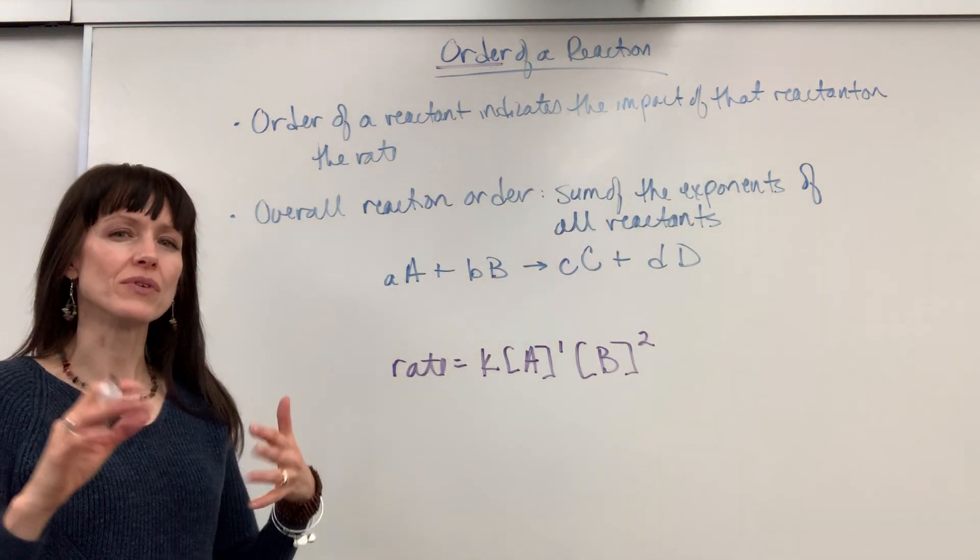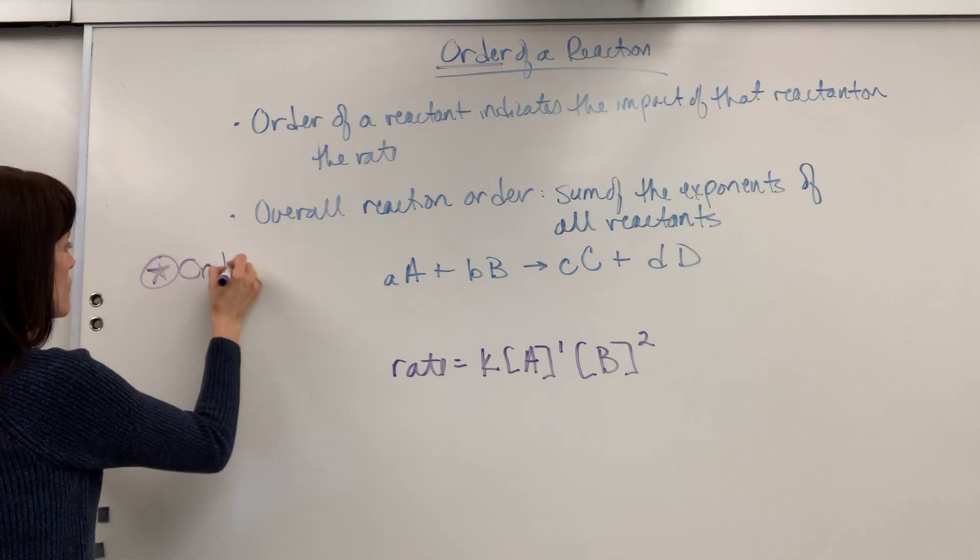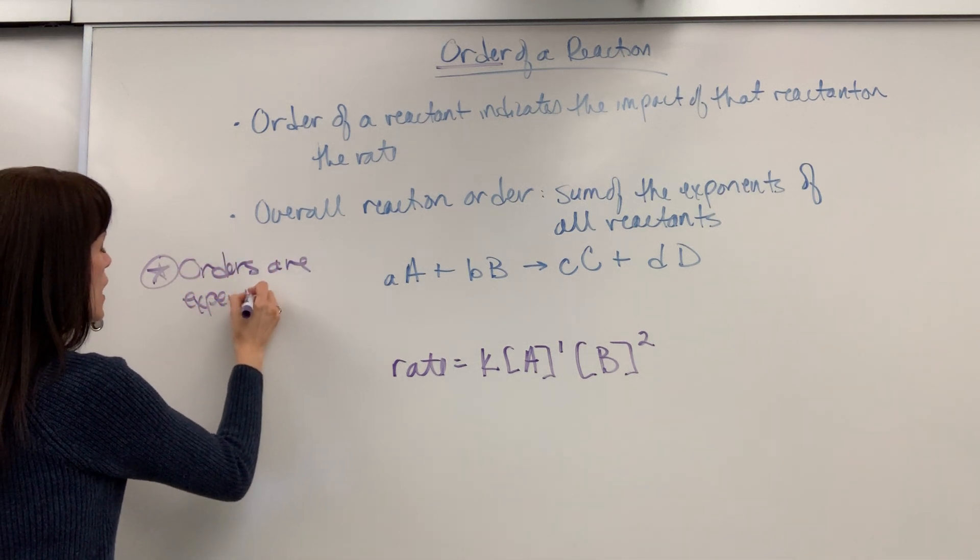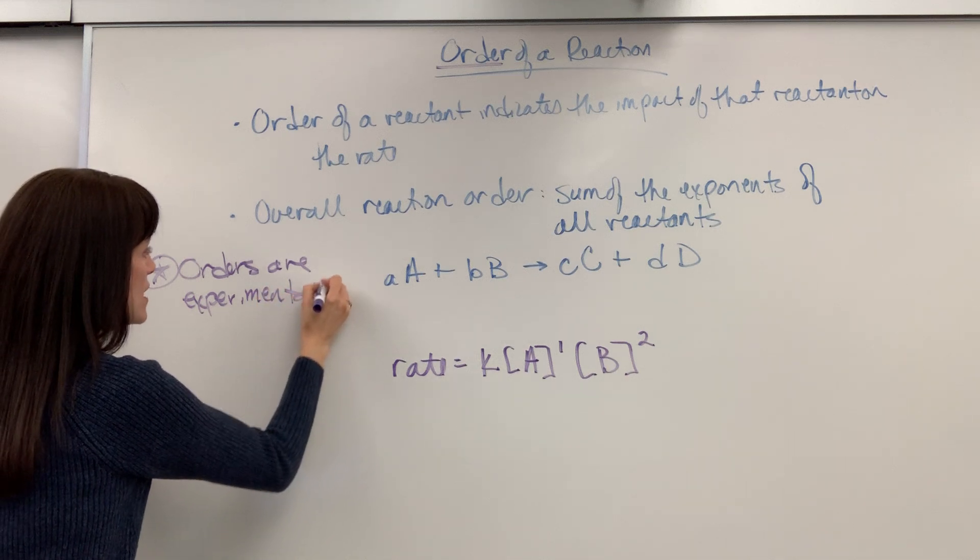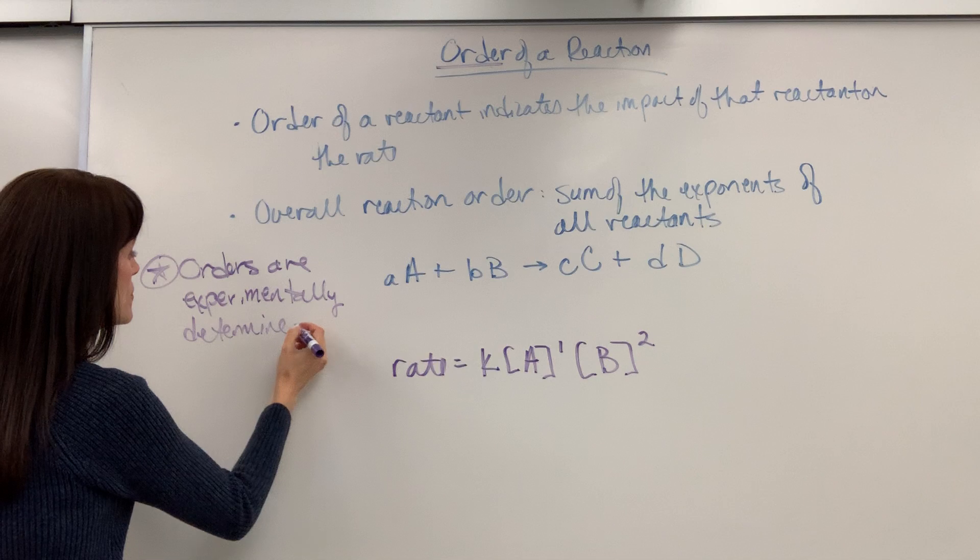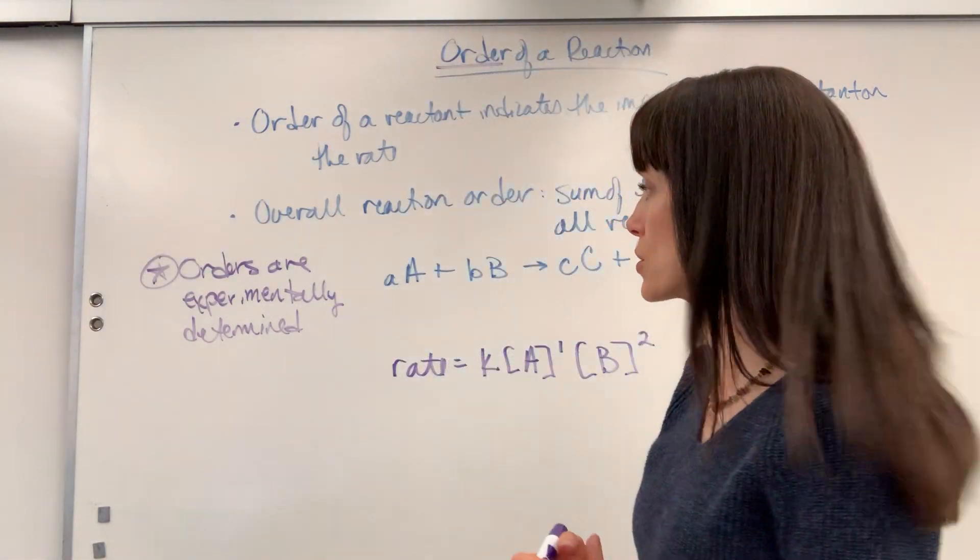So I'm going to put down a couple of notes on the side that are important. Orders are experimentally determined. So you have to have a set of data. And you're probably going to do a lab, a clock reaction is what they're called, where you can determine the orders of a reaction.